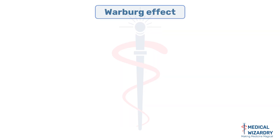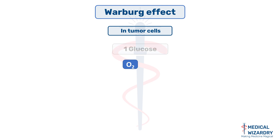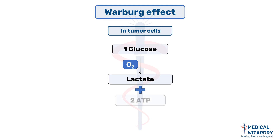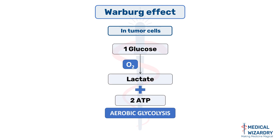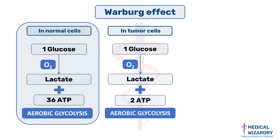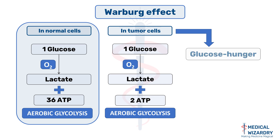So, what is the Warburg effect? This explains that in cancer cells, even in the presence of O2, glucose is being converted to lactate and only 2 ATP. Meaning it requires the intake of 18 glucose molecules to produce energy equal to that of aerobic glycolysis taking place in normal cells. This so-called glucose hunger of tumor cells forms the basis of PET scan, which identifies tumor cells by their increased intake of glucose.